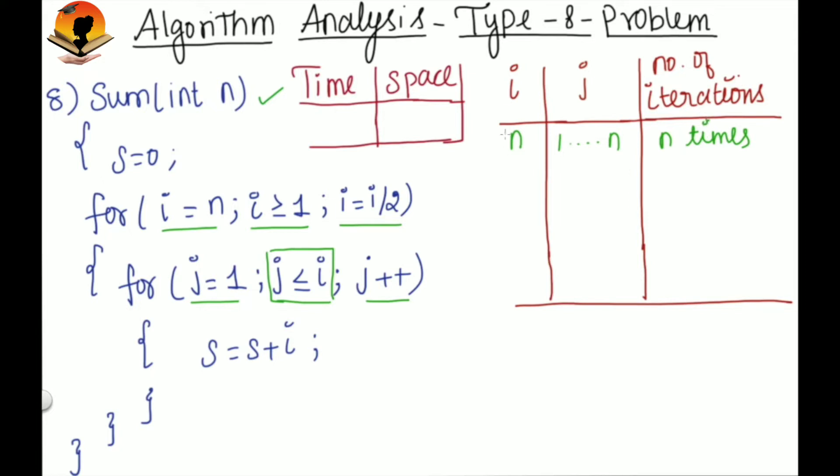And then in the second iteration of the outer loop, i becomes n by 2 and j ranges from 1 to n by 2. So for the second iteration of the outer loop, the inner loop will run from 1 to n by 2, that is n by 2 times.